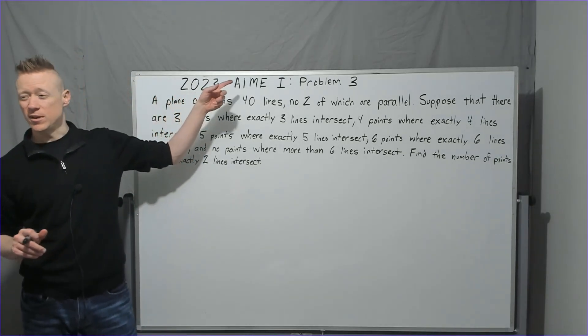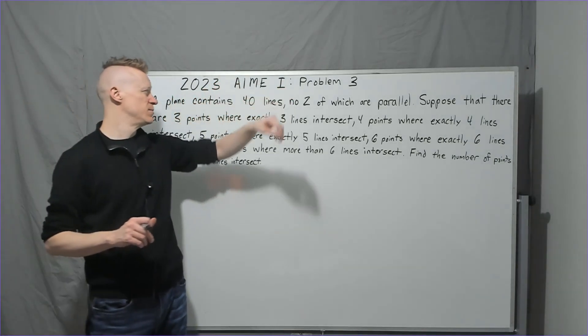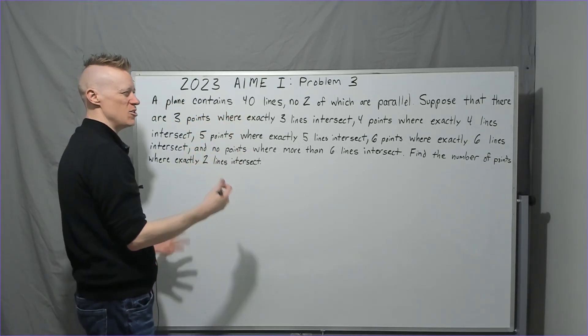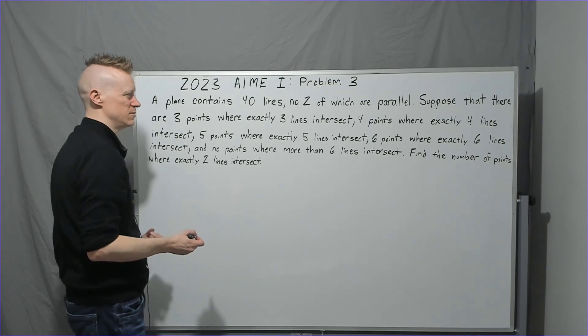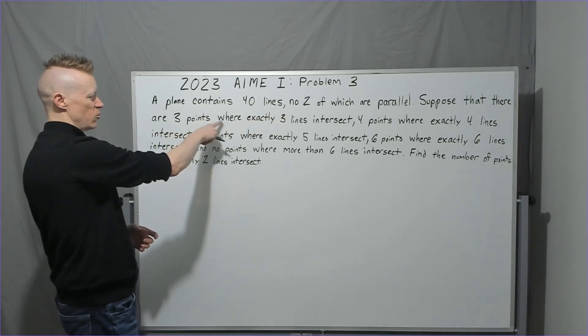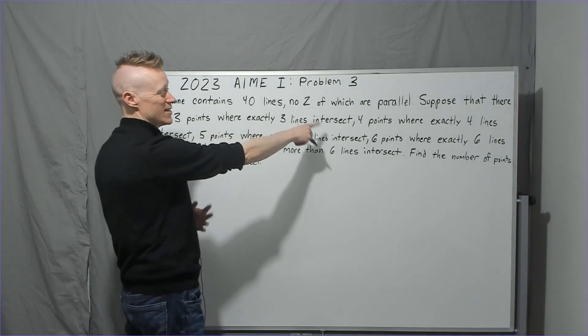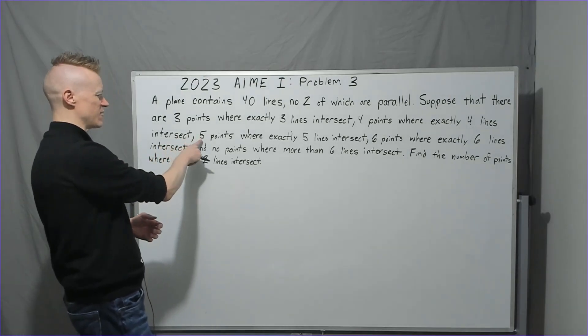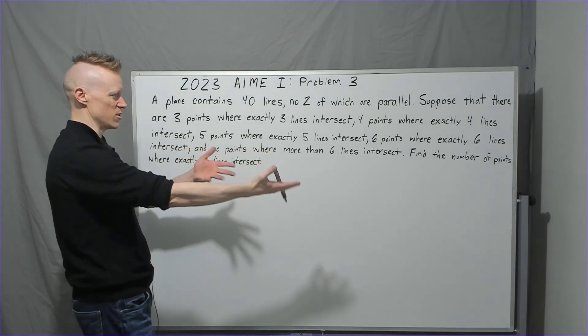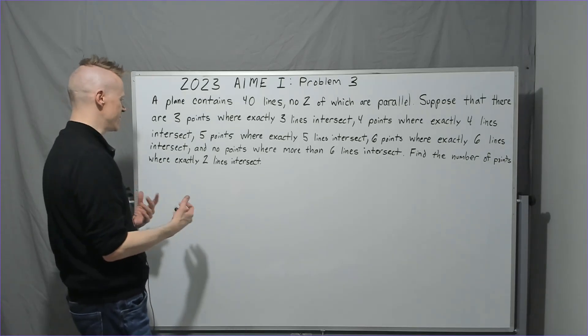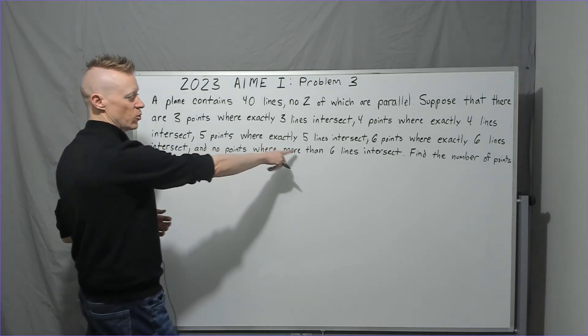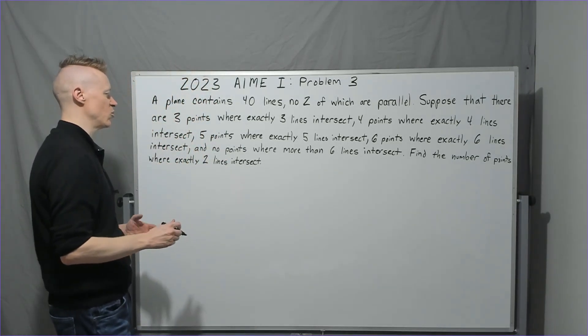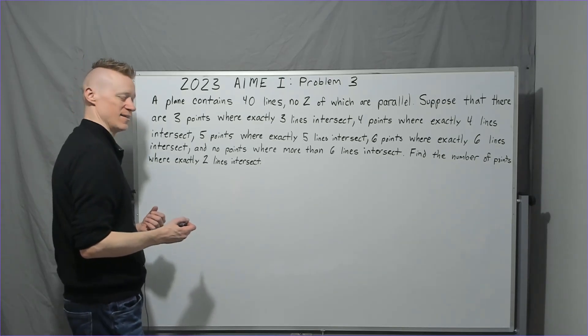Continuing on with the 2023 AME1 problem number three. A plane contains 40 lines, no two of which are parallel. Suppose that there are three points where exactly three lines intersect, four points where exactly four lines intersect, five points where exactly five lines intersect, six where six lines. It's a lot of points and intersections. And no points where more than six lines intersect. Find the number of points where exactly two lines intersect.